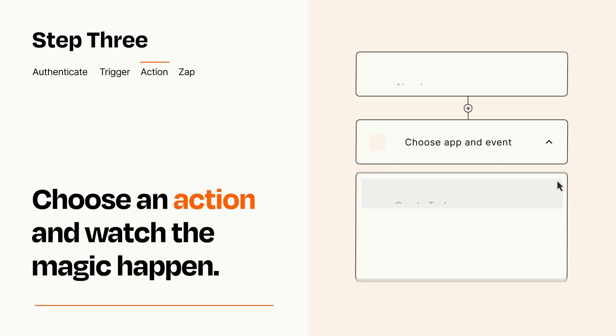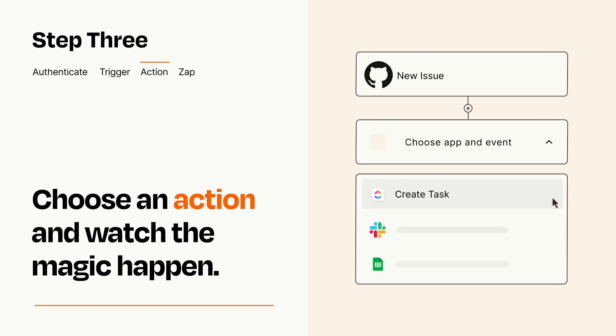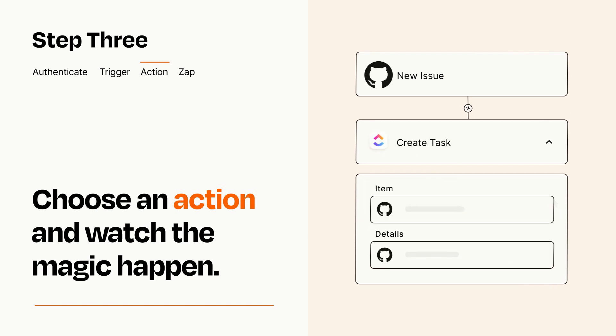Choose the action you want to happen in your target app. You'll see a bunch of fields where you can specify the details of your Zap. You can type free-form text or pull data in from your trigger step as needed.